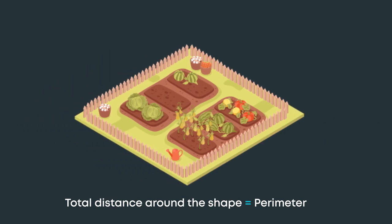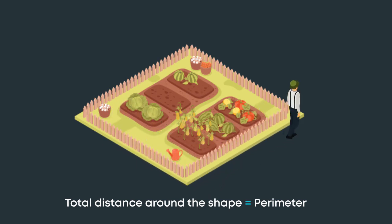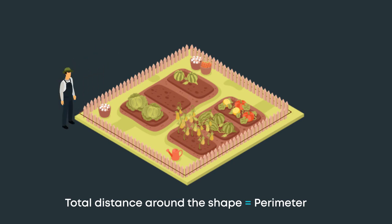A good way to see what perimeter is, is to imagine walking along the edge of a shape. You start at one point and walk along each side until you get all the way back to the point where you started from. The total distance will be the perimeter of the shape.